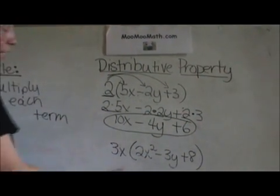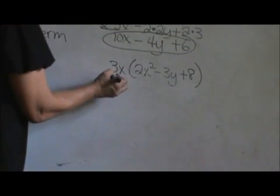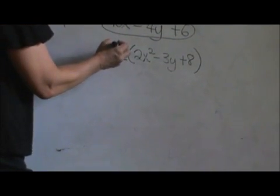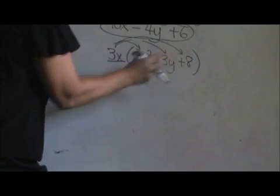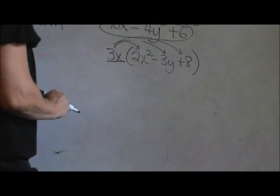Now let's look at one that actually has a variable with it. We have 3x and we're going to distribute the 3x into this what we call a trinomial. Trinomial because we have 3 terms.